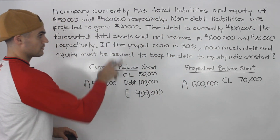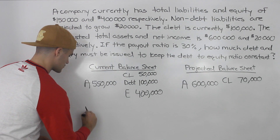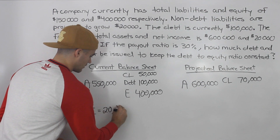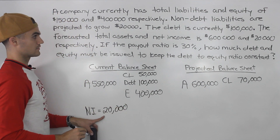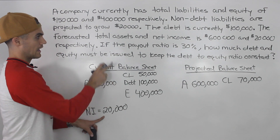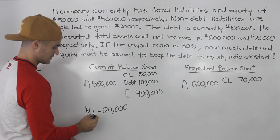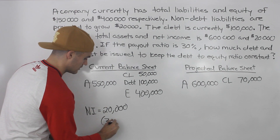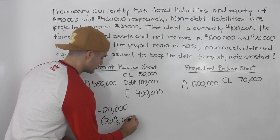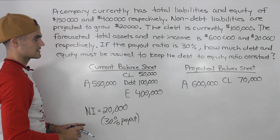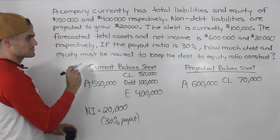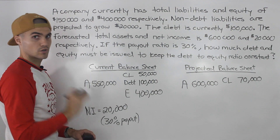Let's write down net income of $20,000 and come back to it later. For now, let's deal with the balance sheet. The payout ratio is 30%, meaning 30% of net income is paid out as dividends. We'll come back to that. The question asks how much debt and equity must be issued to keep the debt to equity ratio constant.